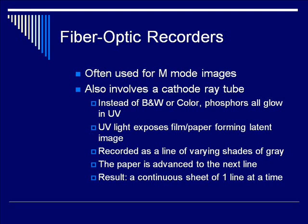A fiber optic recorder is another option to print off images. However, because it prints off a single continuous strip, it is most commonly used to print off M-mode images. This technology involves a cathode ray tube where all of the phosphors glow in ultraviolet. This ultraviolet light exposes film or special treated paper one small row at a time, forming a latent image recorded as a line of varying shades of gray. A higher voltage translates to more brightness from the CRT, which translates to a darker shade of gray on the paper. The paper is then advanced to the next line, producing a continuous sheet — making it the ideal medium to record an M-mode image.